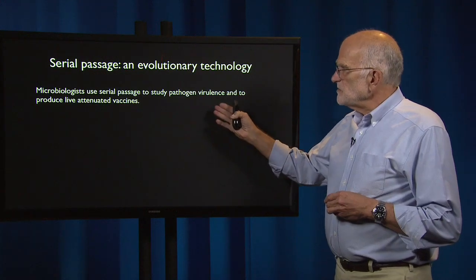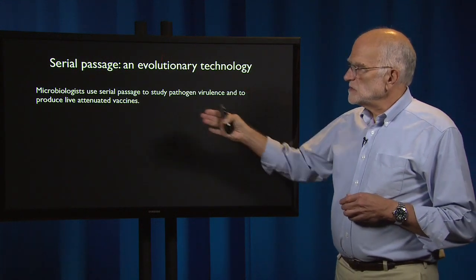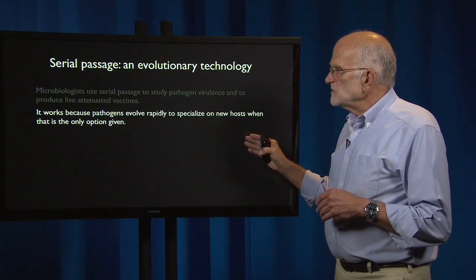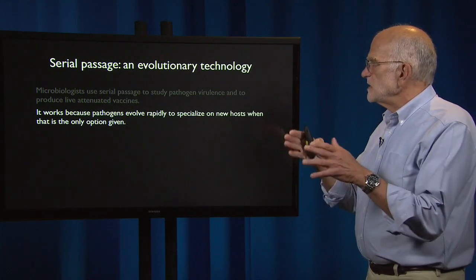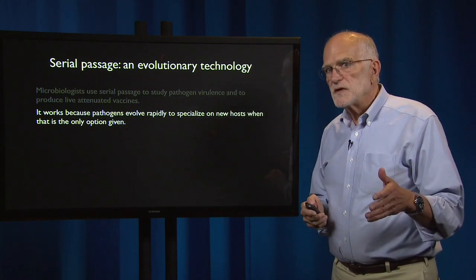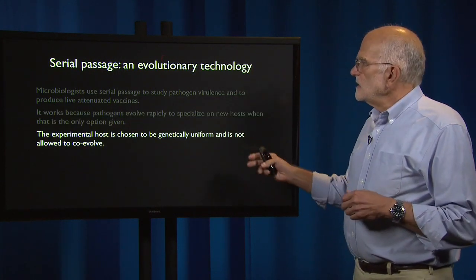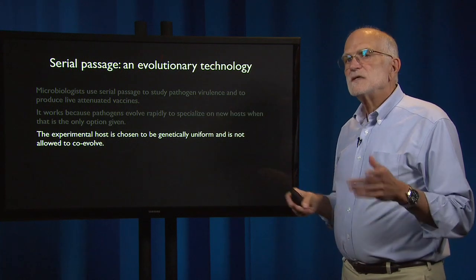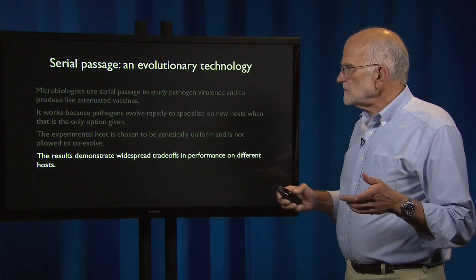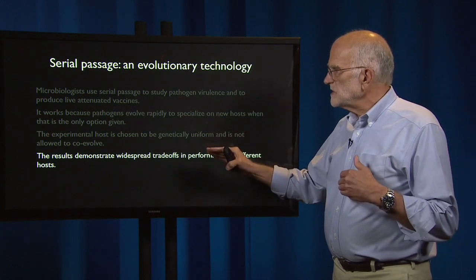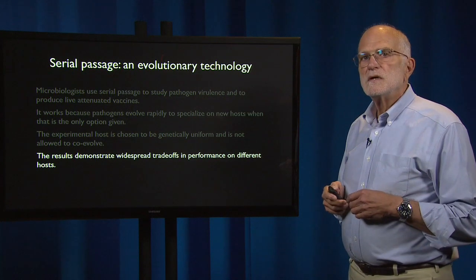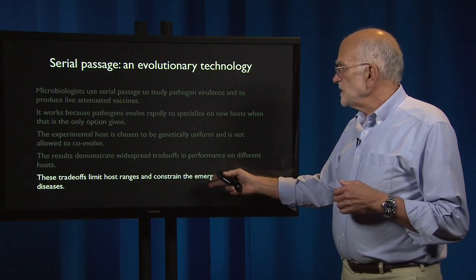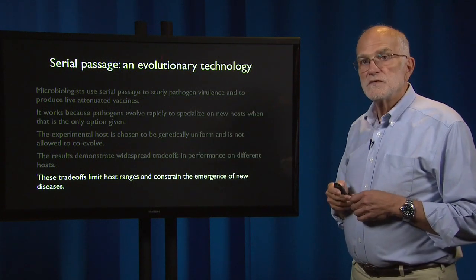Microbiologists use serial passage to study pathogen virulence, and they also use it to produce live attenuated vaccines. It works because pathogens evolve rapidly to specialize on new hosts when that is the only option they are given. The experimental host is chosen to be genetically uniform and is not allowed to coevolve. The results demonstrate widespread trade-offs in performance on different hosts, and these trade-offs in nature limit host ranges and constrain the emergence of new diseases.